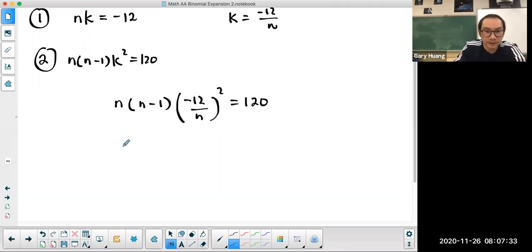Okay, so I'm going to have n times n minus 1, negative 12 squared is 144 over n squared, equal to 120. I'm going to cancel one of the n's.